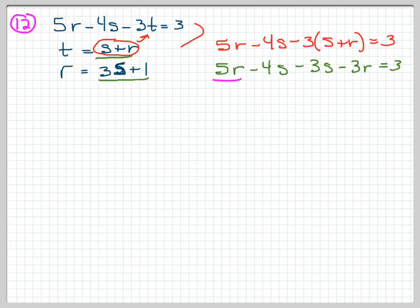I'll clean that up some more. I'll combine my r's together, that's 2r, and my s's together, that's minus 7s equals 3.